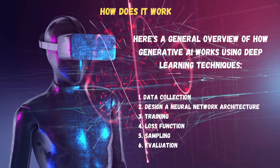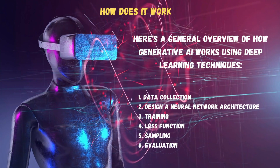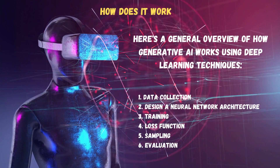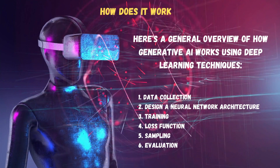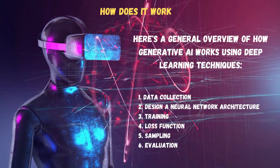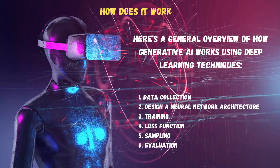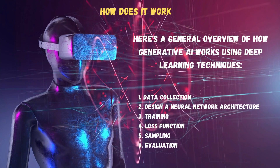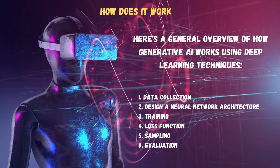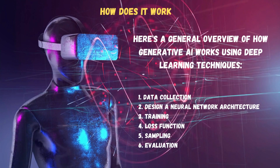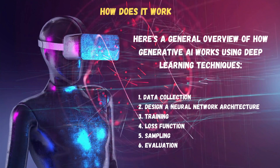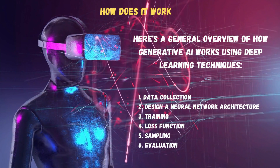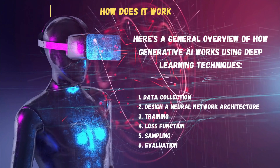Here's a general overview of how Generative AI works using deep learning techniques. Step 1: Data Collection. Step 2: Design a Neural Network Architecture. Step 3: Training. Step 4: Loss Function. Step 5: Sampling. Step 6: Evaluation.